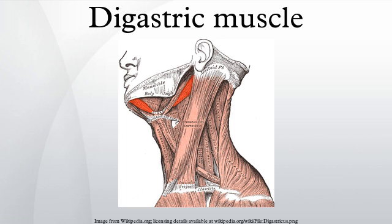Structure: the digastricus consists of two muscular bellies united by an intermediate rounded tendon. The two bellies of the digastric muscle have different embryological origins, and are supplied by different cranial nerves.